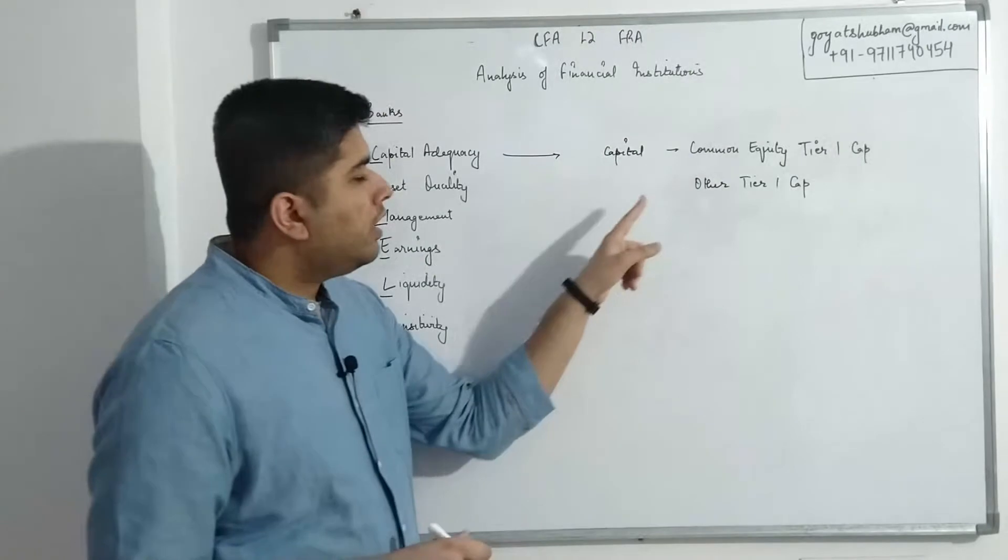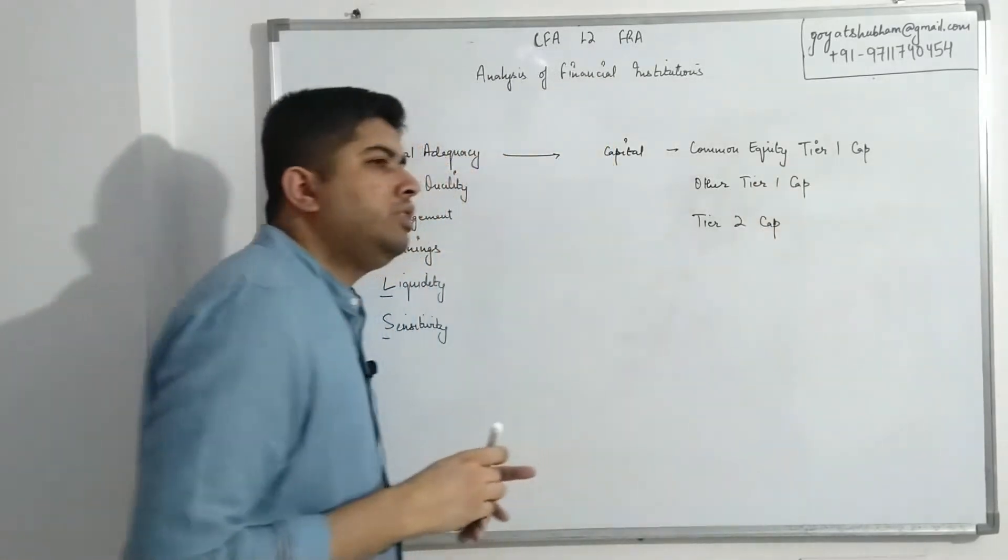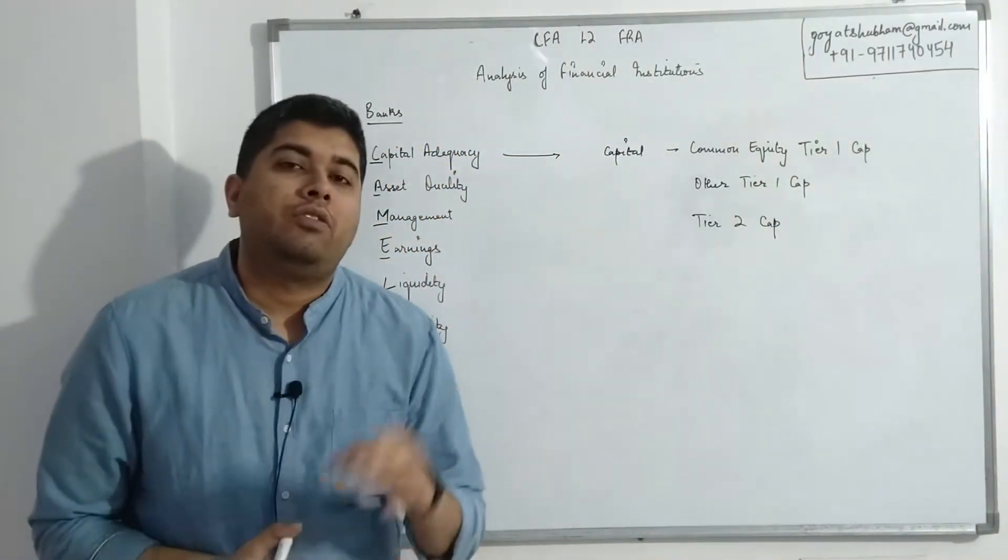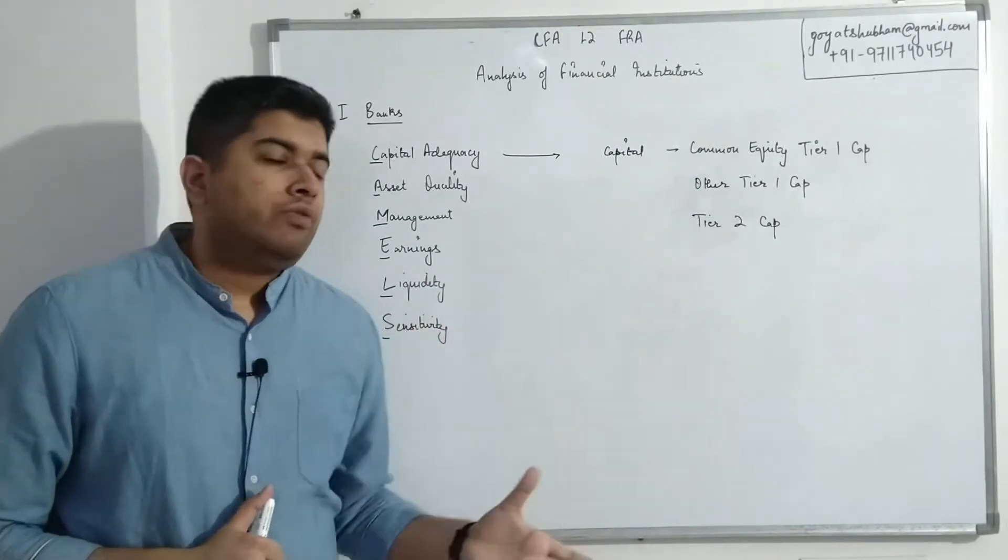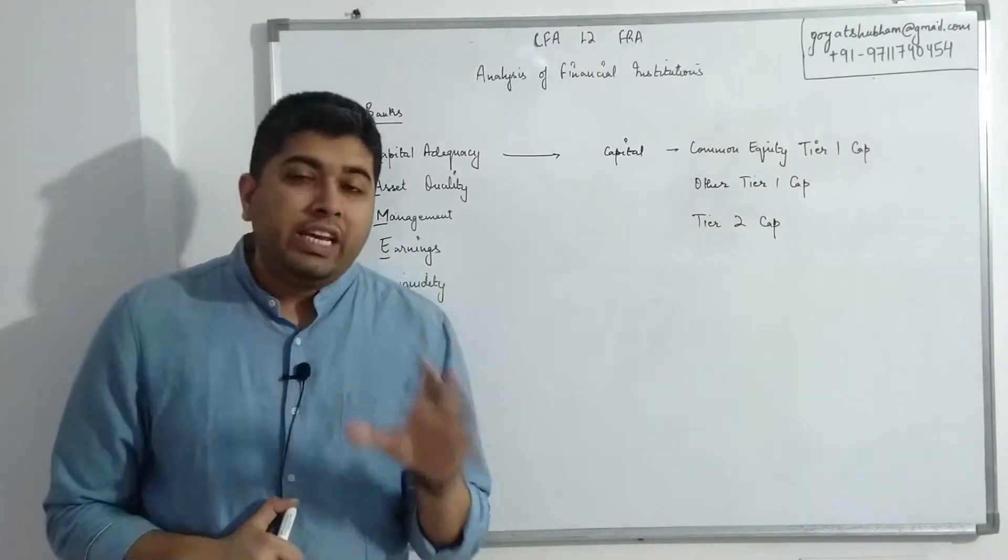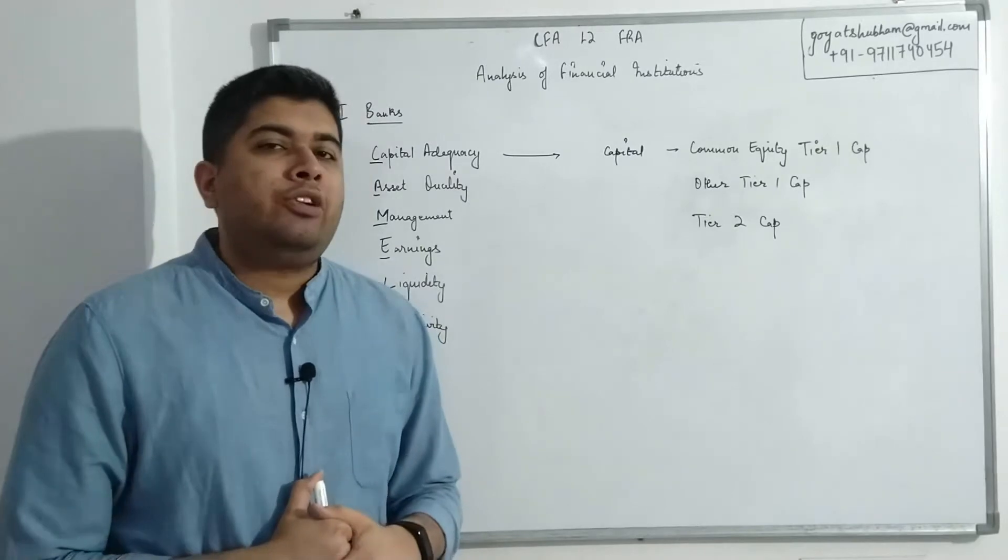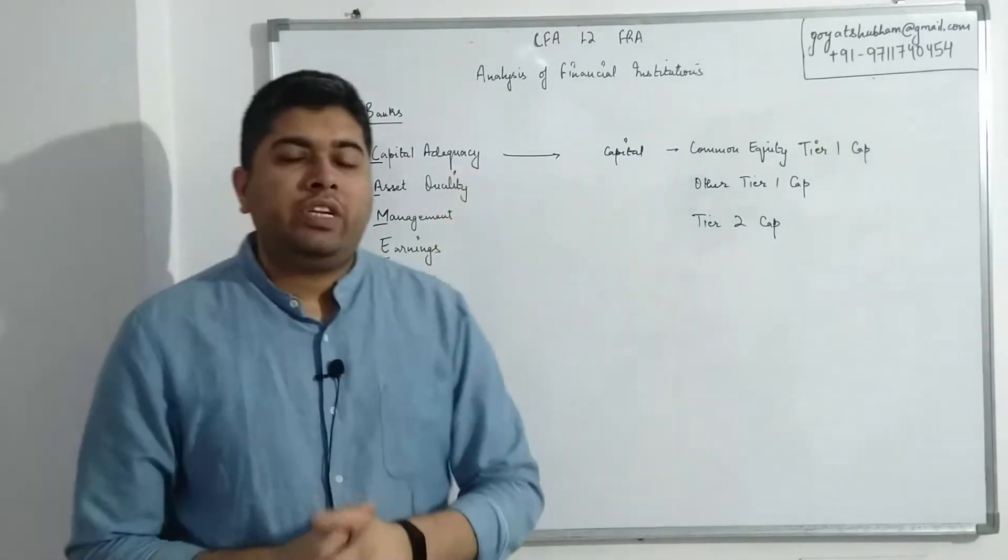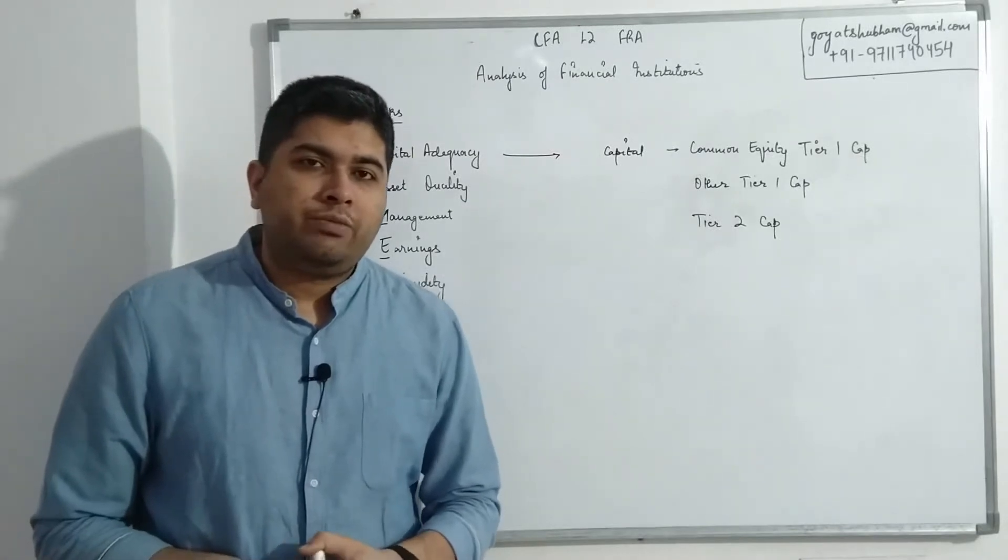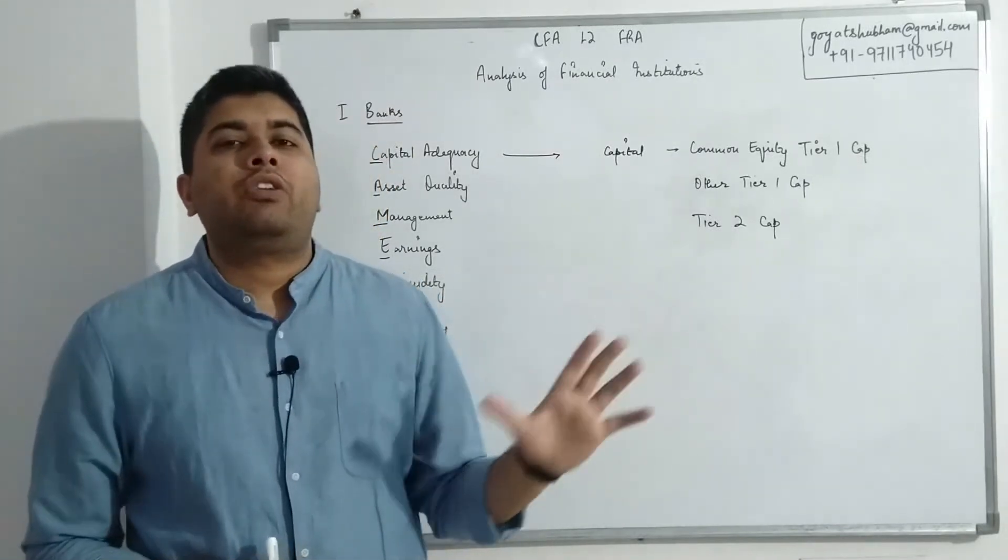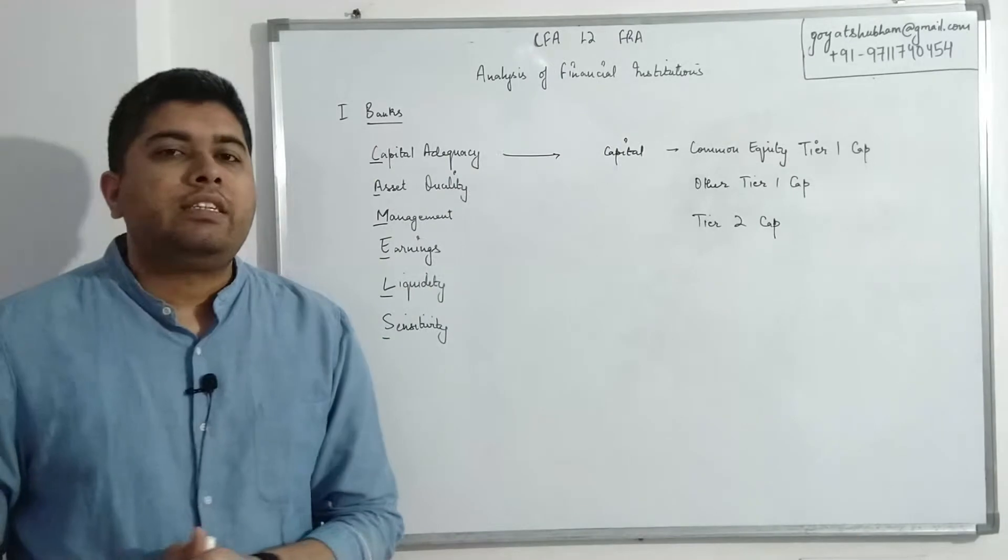Aside from these, you have Tier 2 Capital. Tier 2 Capital includes other kind of instruments which have original maturities of more than five years. So when they were issued, if they were issued for more than five years, all of those are included over here. Any sort of instrument for raising capital that the banks use which has a time duration of less than five years is not part of any of these three and hence is not considered part of the capital of the bank.